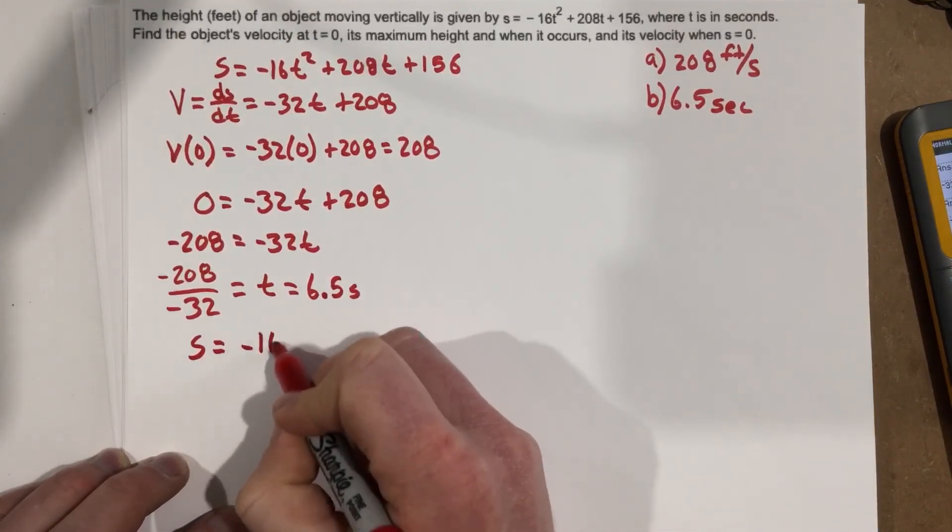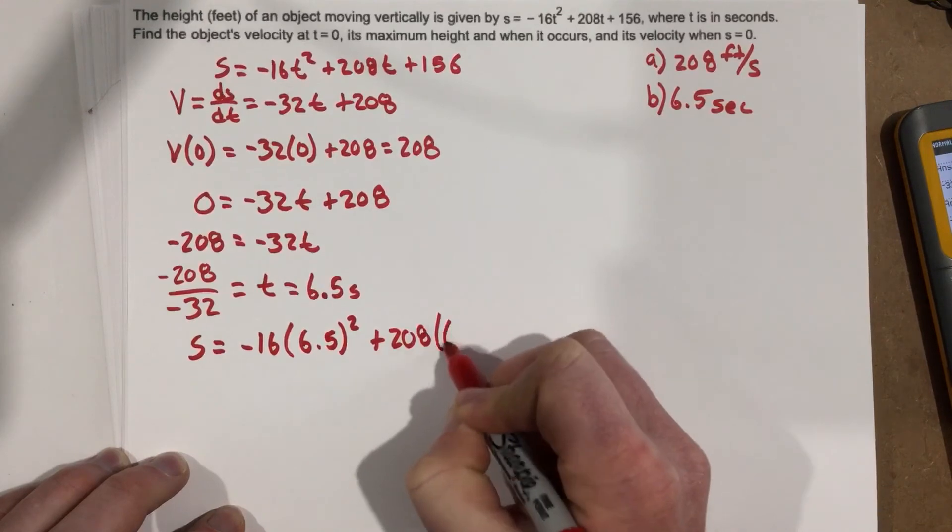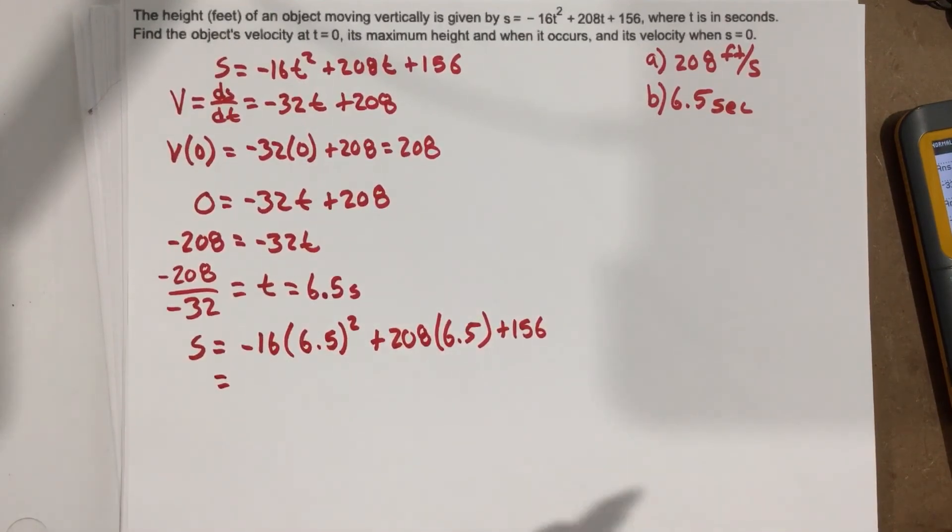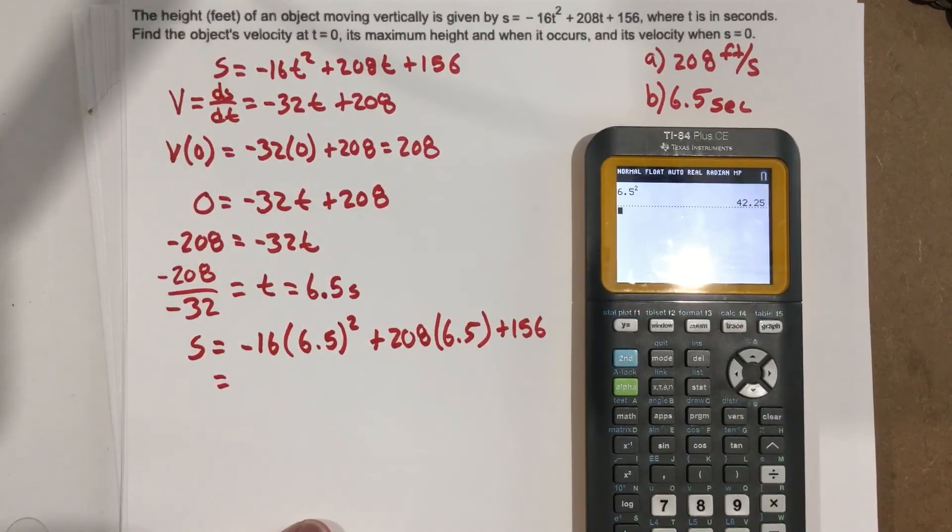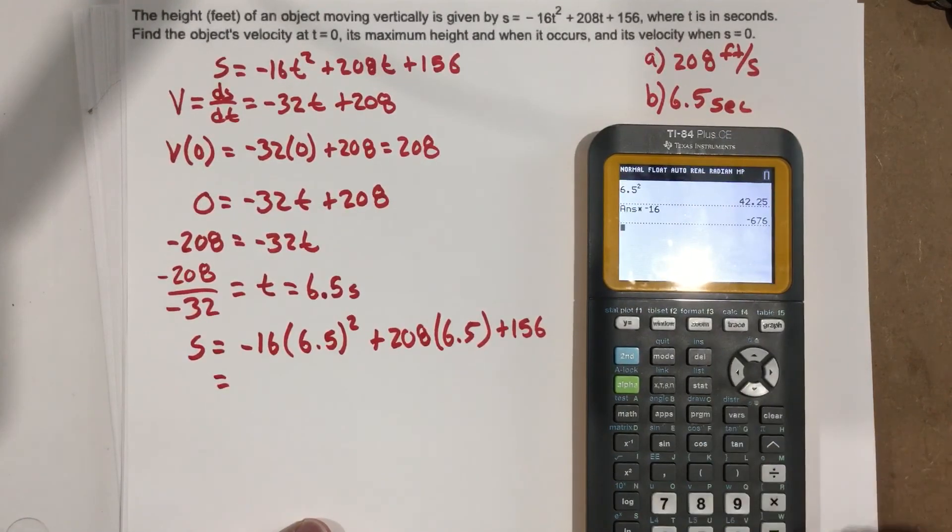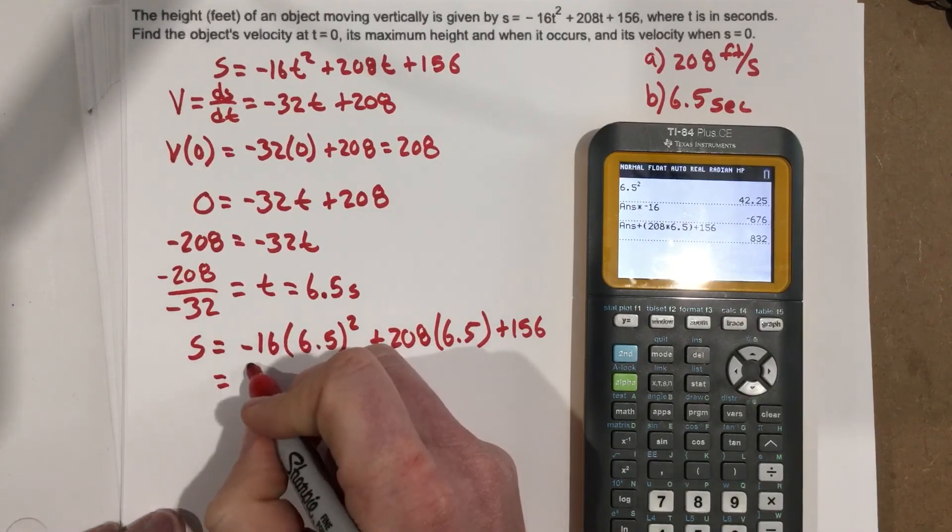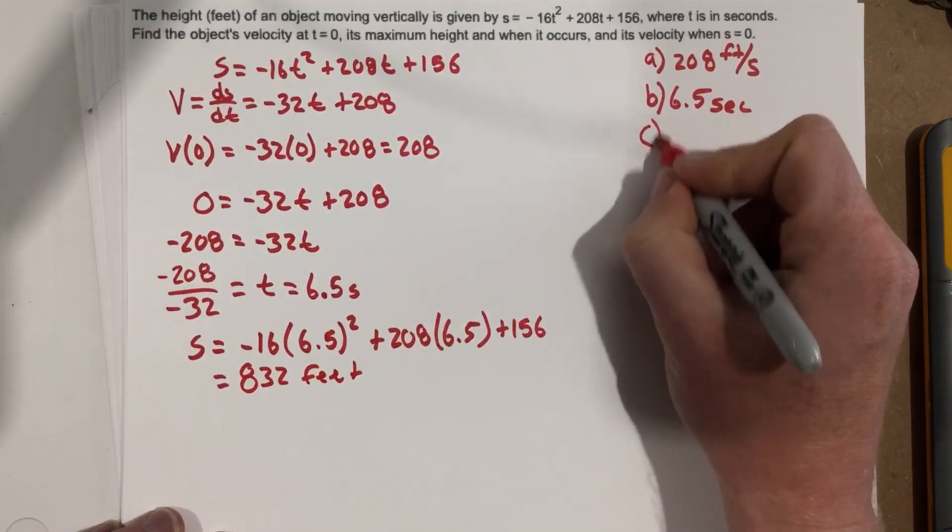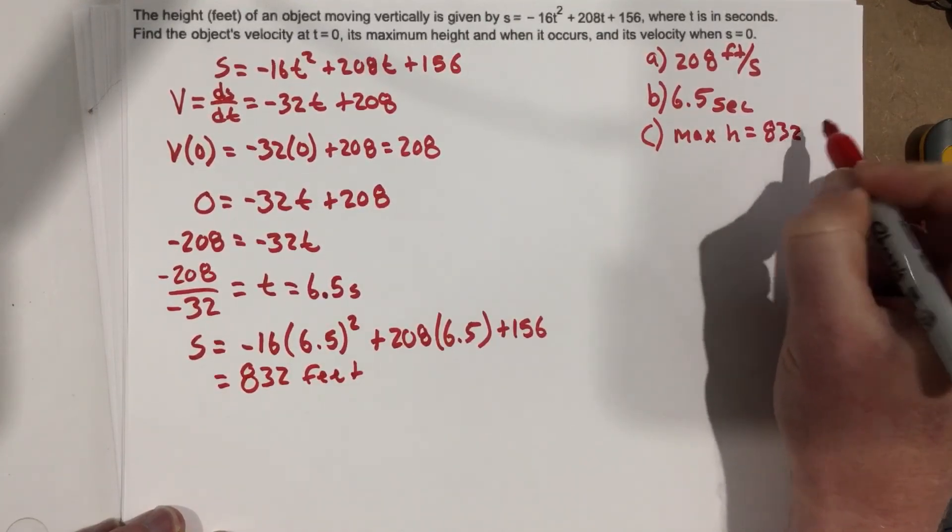So S equals negative 16, and we'll say 6.5 squared plus 208 times 6.5 plus 156. Plug all this in the calculator. So 6.5 squared times negative 16. I like to piece this together. So plus 208 times 6.5, and then I can do the plus 156 as well at the same time. 832 is its height, 832 feet. So that's the max height. Part C, max height. Let's say max H equals 832 feet.